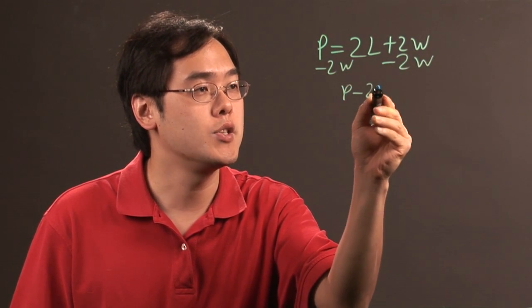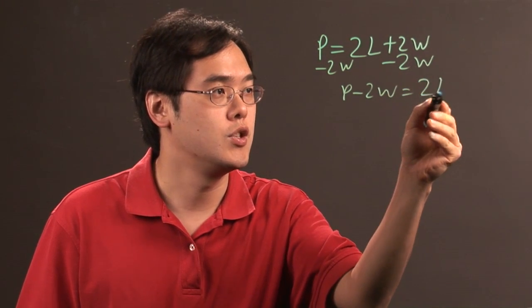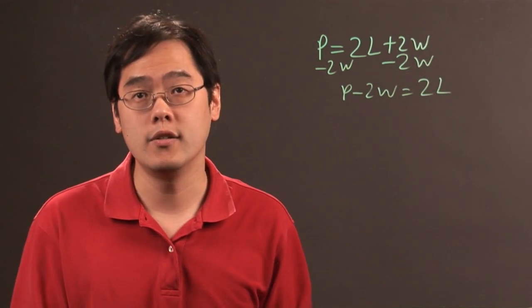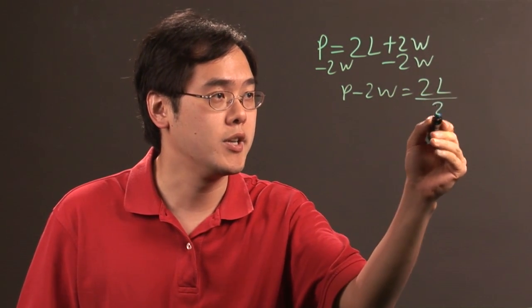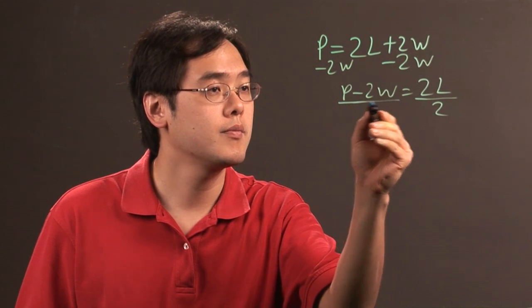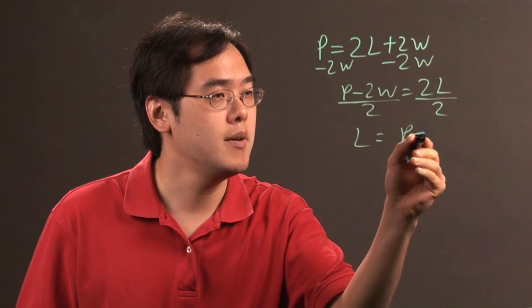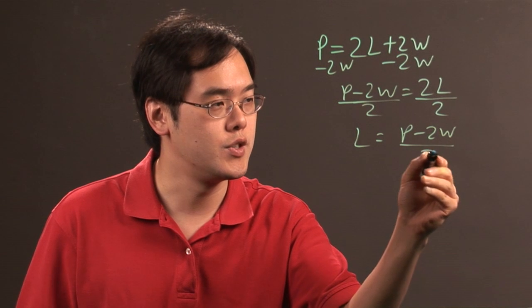So you have p minus 2w is equal to 2l. And then to solve for l, get l on its own, you divide both sides by 2. So you have l is equal to p minus 2w over 2.